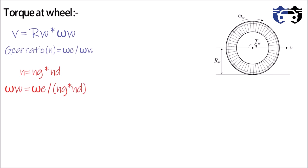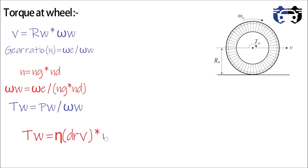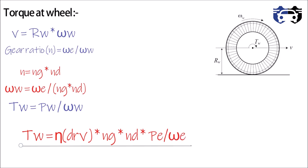Since torque on the wheels equals power divided by omega, the final torque on the wheels is given by: drivetrain efficiency × Ng × Nd × Pe / omega_e. This is the value of torque at the wheels.